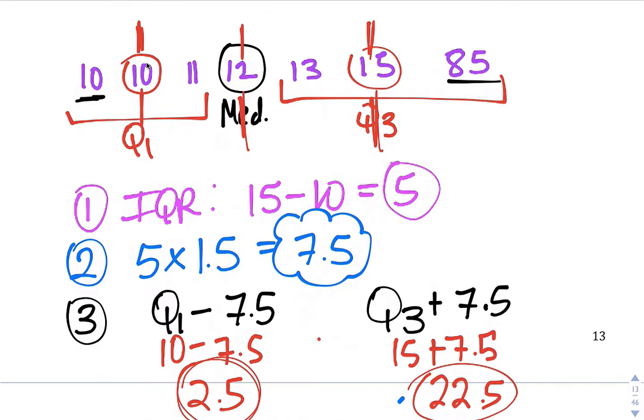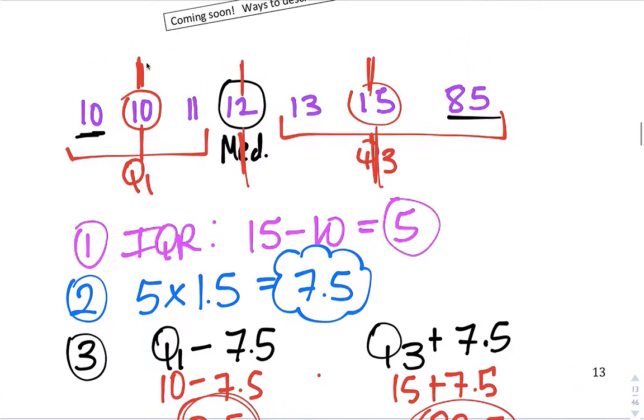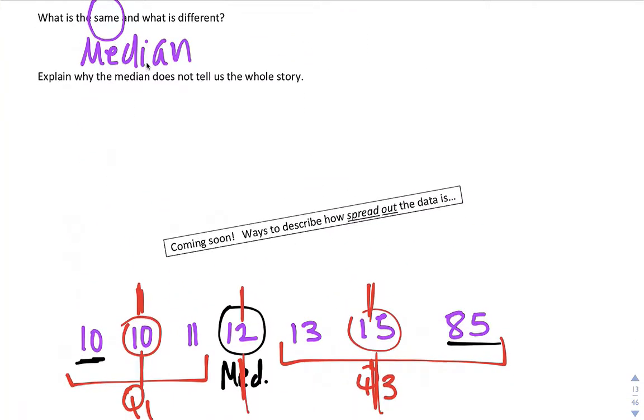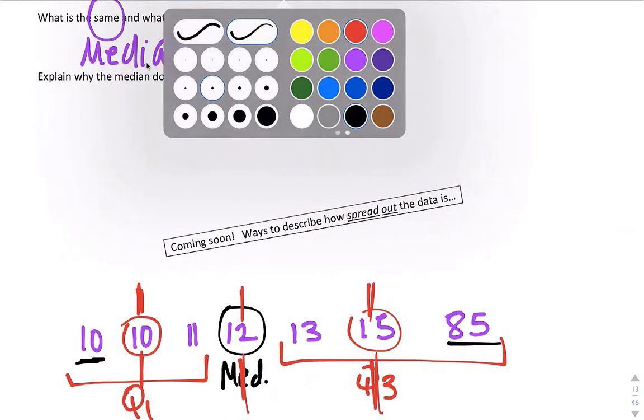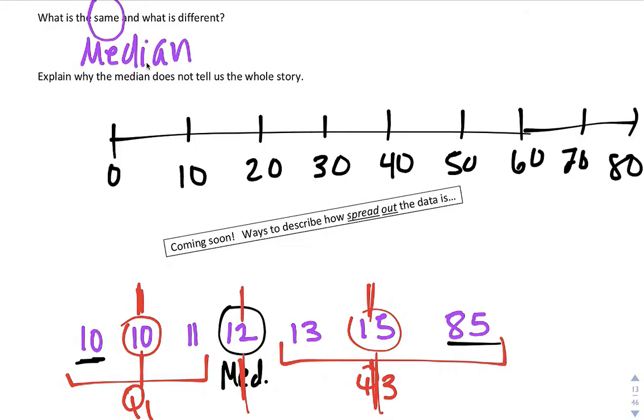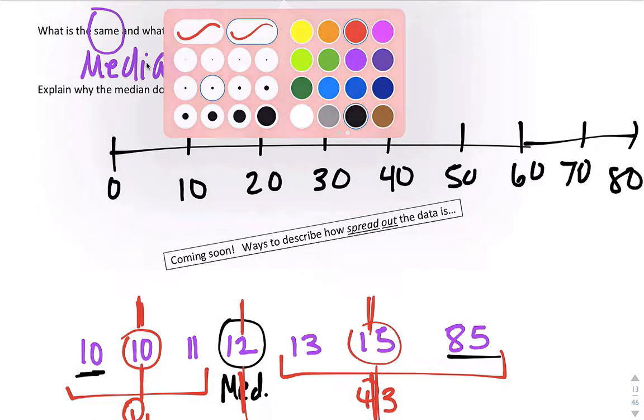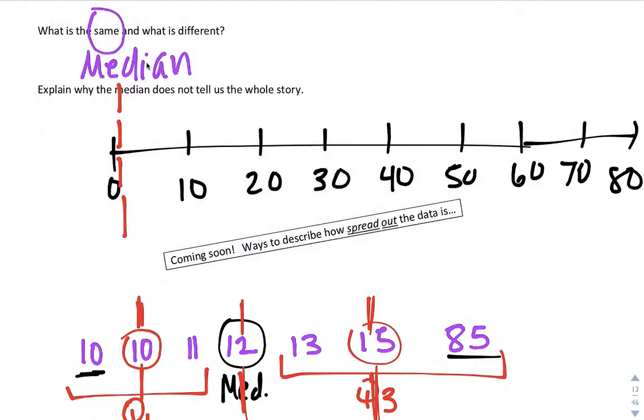Let's draw our modified box plot. Our lowest number is 2.5, highest number is 85. So let's say this is 0, and let's go 10, 20, 30, 40, 50, 60, 70, 80. Okay, so to draw your modified box plot, first I'm going to draw the fences: 2.5 and 22.5. So 2.5 is about right here, 22.5 is about right here. So those are our fences.